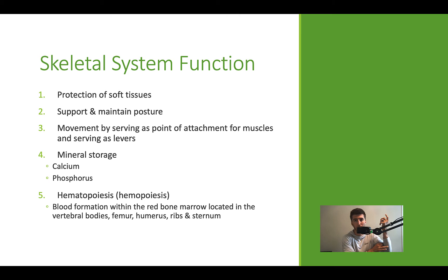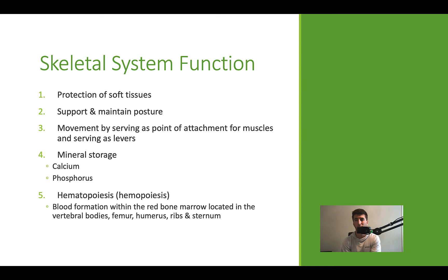Bones also serve as a spot of mineral storage — like deep freezers. They store large amounts of calcium and phosphorus. A student in my exercise physiology class once asked where phosphorus comes from for things like ATP. Your bones are actually one of the primary sources of phosphorus inside the body, and it's a pretty big source.